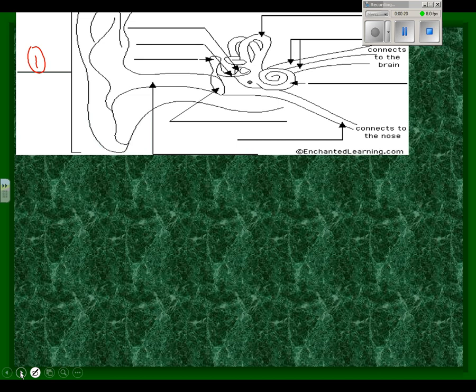I gave you this diagram yesterday or recently, and I'd like to go through the parts of it. First of all, the anatomy of the ear. Number one we have is called the pinna. The pinna is the outer part of the ear, but it's more important than that, actually.